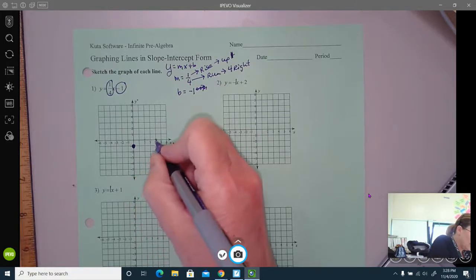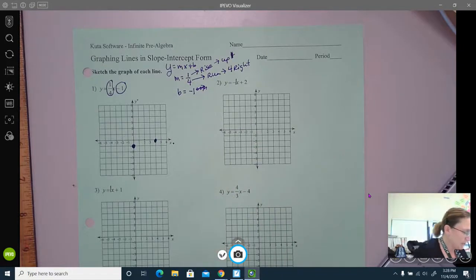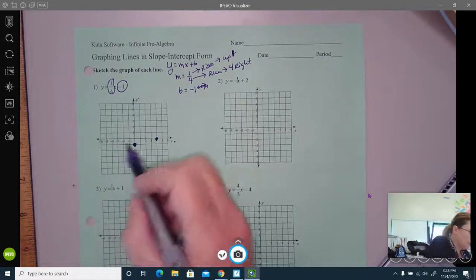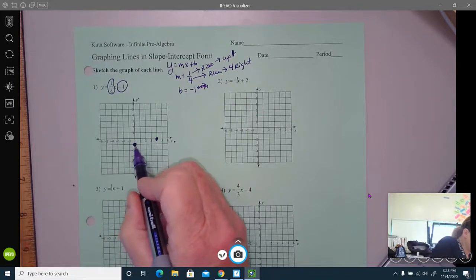All right, then I'd be off the graph. I'm going to make another point just because it's easier to do a line if I have three points. So I want to go in the reverse direction of the slope. So it was up one,